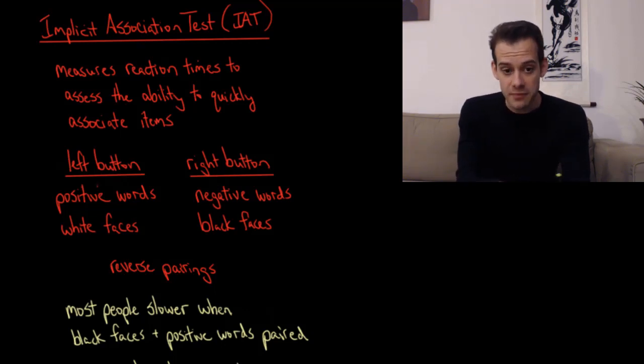And then you do the same task, but with reverse pairings, where positive words are paired with black faces, or negative words are paired with white faces. And the order that you do these in will be mixed up which one you do first or which one you do second, and you'll do each of them multiple times to try to reduce the effects of practice on the task.